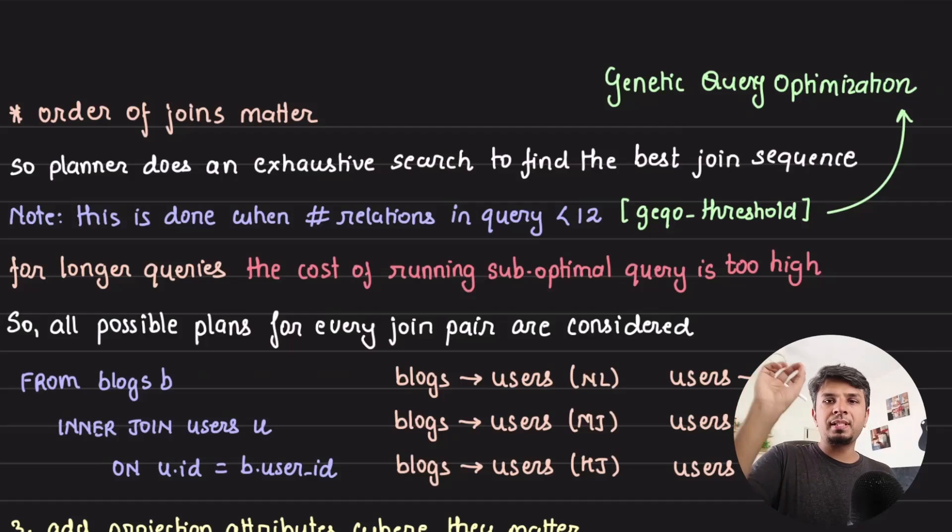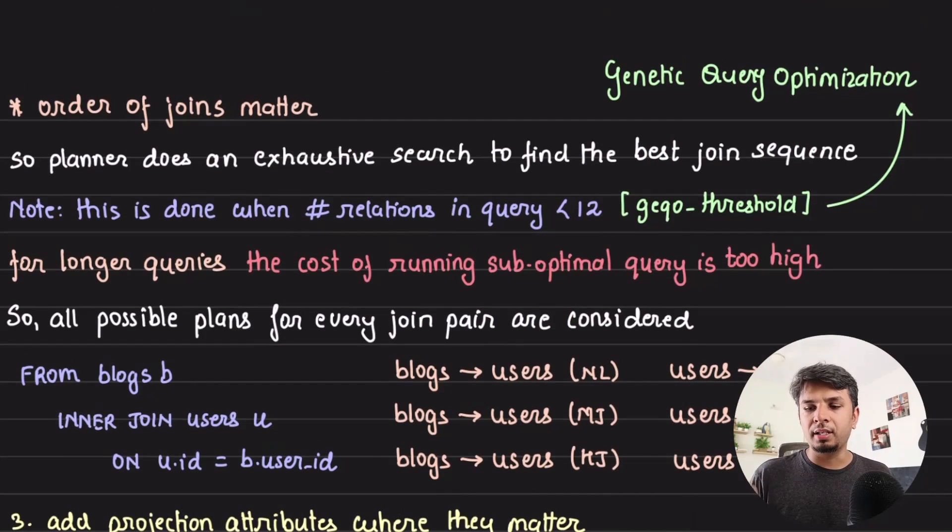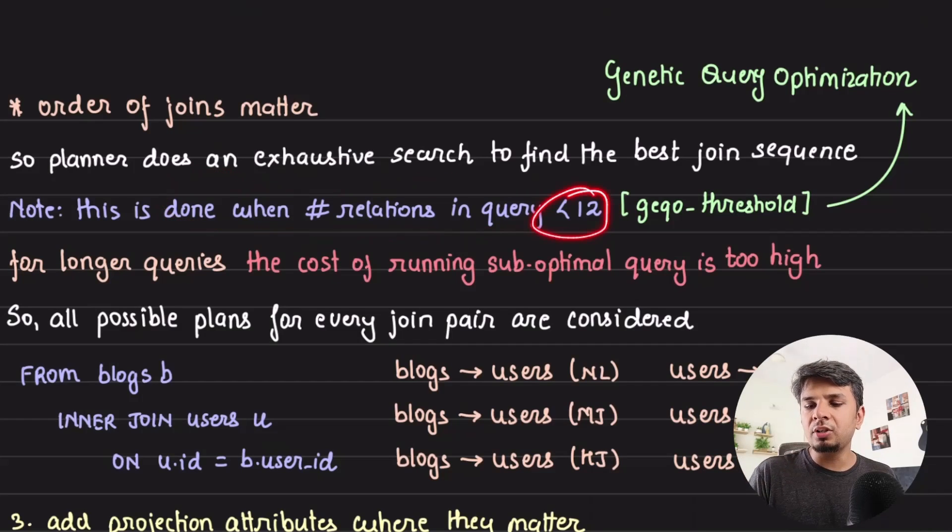For all the tables involved, Postgres planner typically does an exhaustive search for all possible combinations for all possible algorithms and then adds it to its candidate set to estimate the cost of the query execution. There is a threshold that it refers to. If your number of relations in your from clause when you're doing joins is less than 12, it does an exhaustive search. Otherwise it tries to estimate and then pick the best one using statistics which are available. The name of the threshold is GEQO threshold, which is genetic query optimization threshold, and the default value is 12, but you can change it.